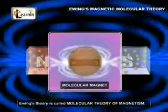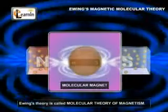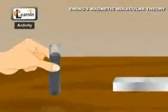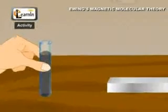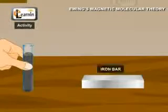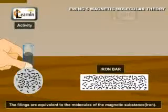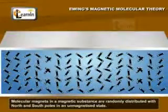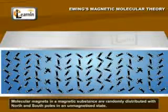Therefore, Ewing's theory is called the molecular theory of magnetism. A test tube containing iron filings in an unmagnetized state is like an ordinary iron bar — the filings are equivalent to the molecules of a magnetic substance. In an unmagnetized state, the molecular magnets in an iron bar are randomly distributed with their N and S poles pointing in all possible directions.